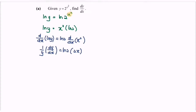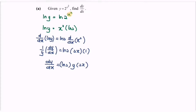Simplifying the situation and solving for dy/dx: dy/dx equals ln 2 times y times 2x. Rearranging, dy/dx equals 2x times 2 to the power of x squared times ln 2.